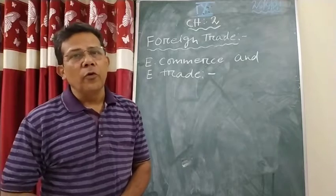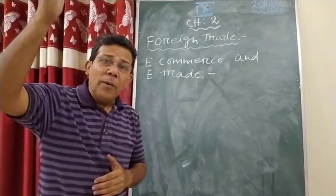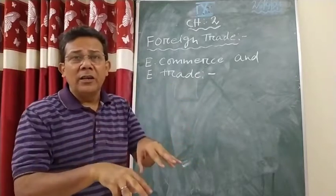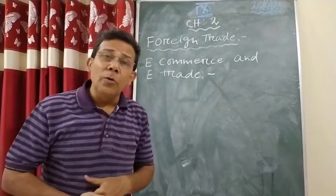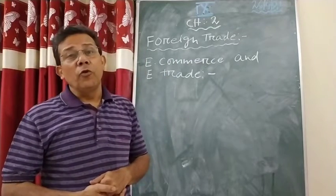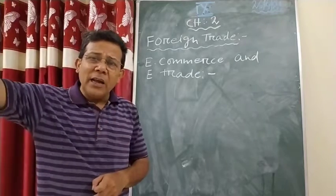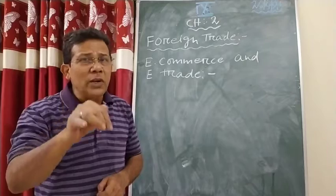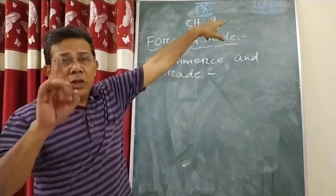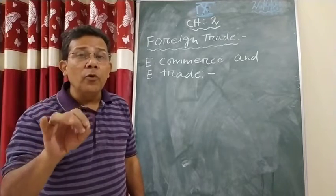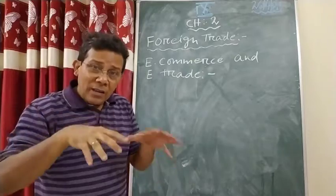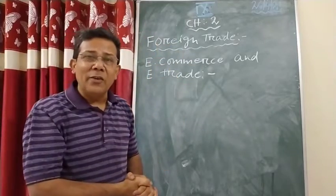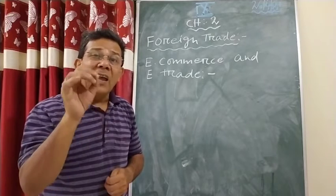The third type is entrepot trade. That means when you are buying something from a particular country, but the things bought are not used by that country — they sell it to some other country — those types of trades are called entrepot trade. For example, suppose India buys something from USA, but the product India bought from USA is not used in India; it has been sold to Bangladesh. So this kind of trade is called entrepot trade.